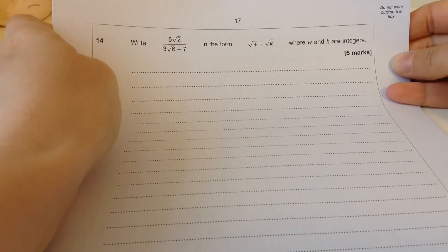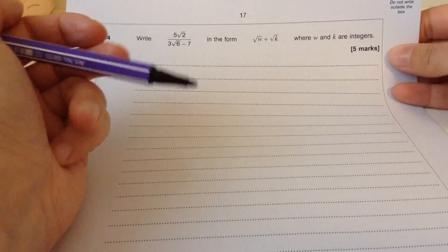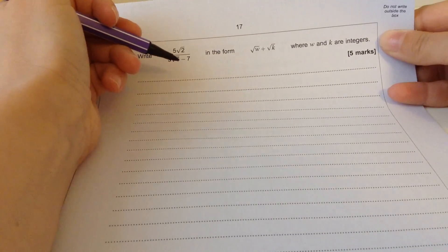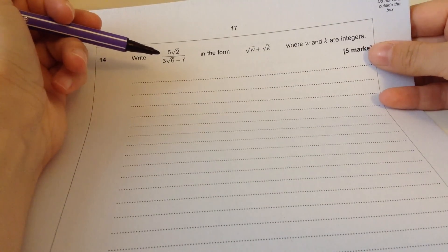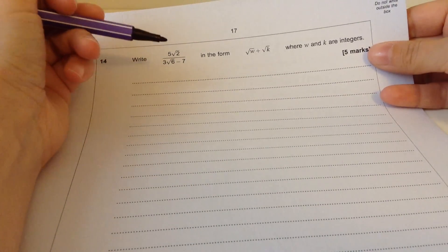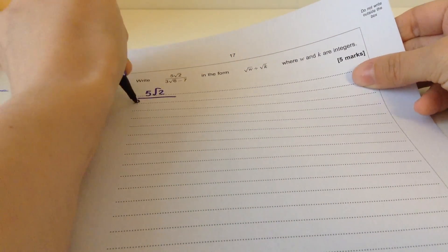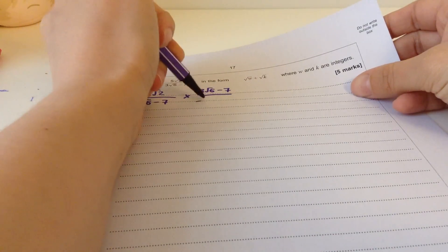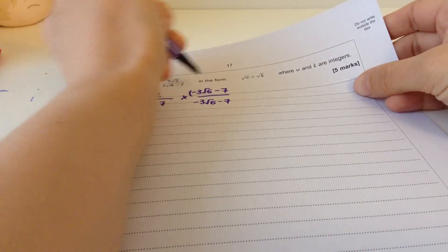Number 14, last question for this part. Write this surdy thing in the form of that surdy thing where w and k are integers. So we need to rationalize this denominator. It looks a little bit different from how in normal GCSE when we have to rationalize denominators, but it's still the same principle. We need to multiply the top and bottom by the conjugate. Remember, that means we have to negate the surd part and leave the non-surd part the same.